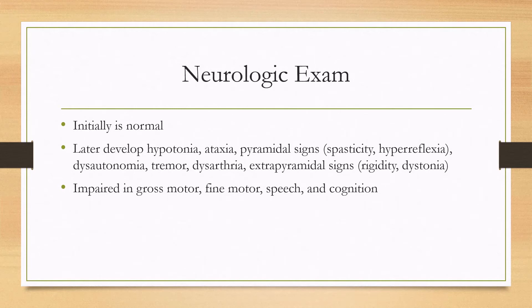The neurologic exam is initially normal, but later on, typically after one year of age, they'll start developing hypotonia, ataxia, some pyramidal signs, spasticity or hyperreflexia, dysautonomia, tremor, dysarthria, or extrapyramidal signs such as rigidity and dystonia.